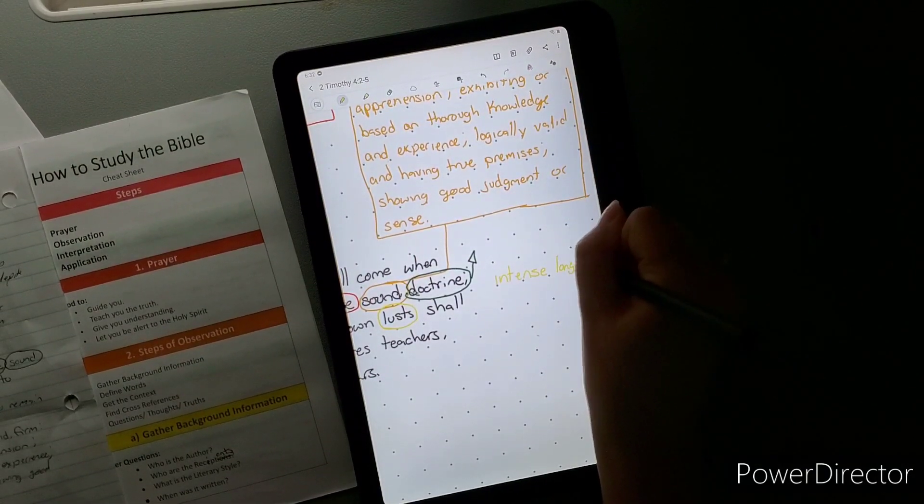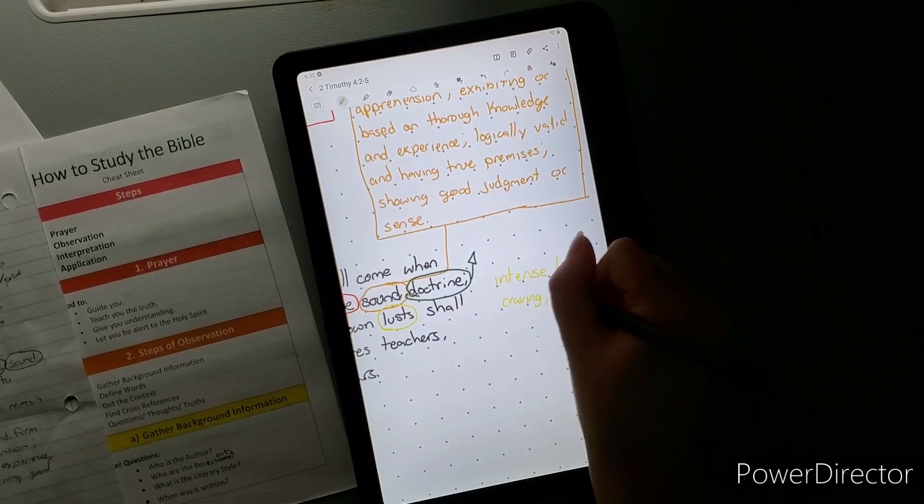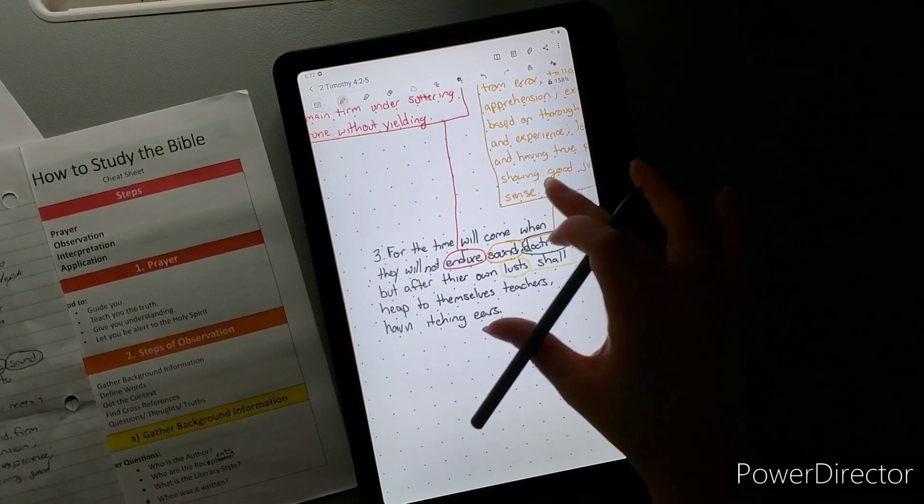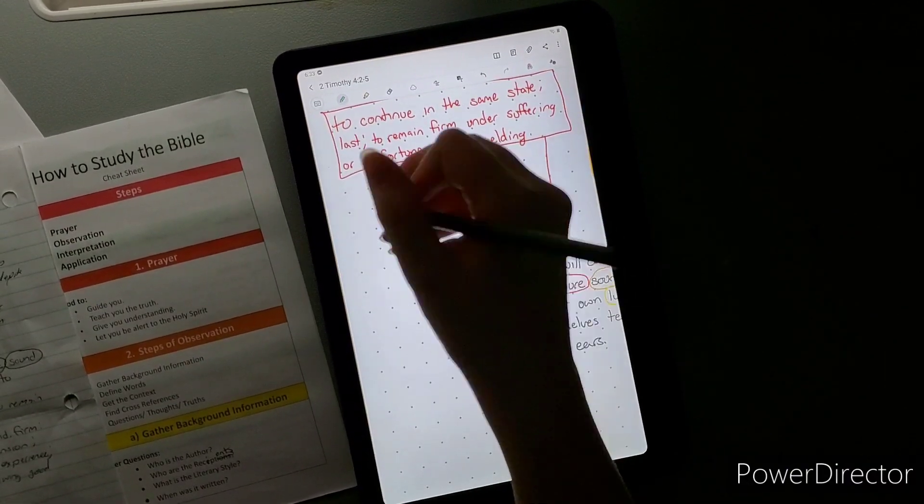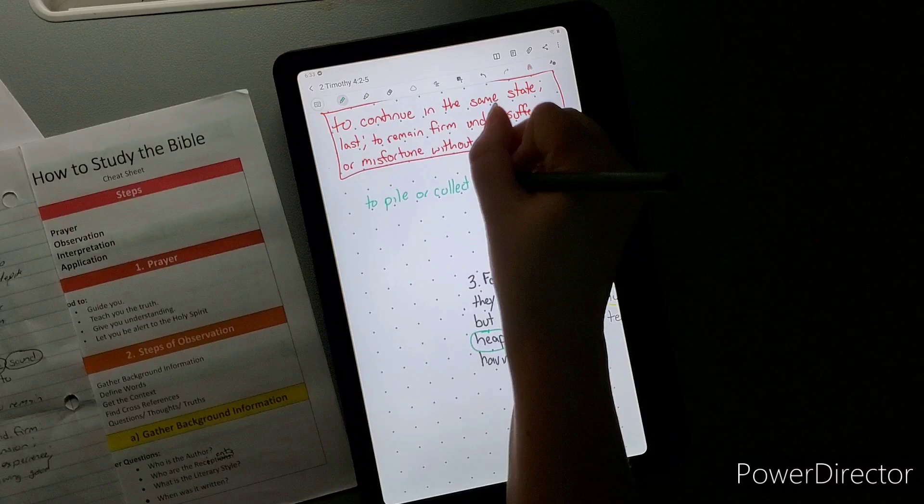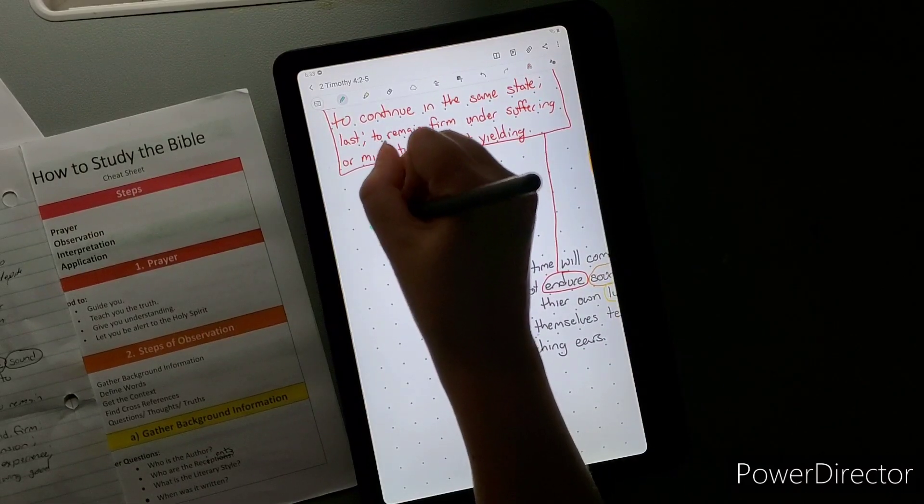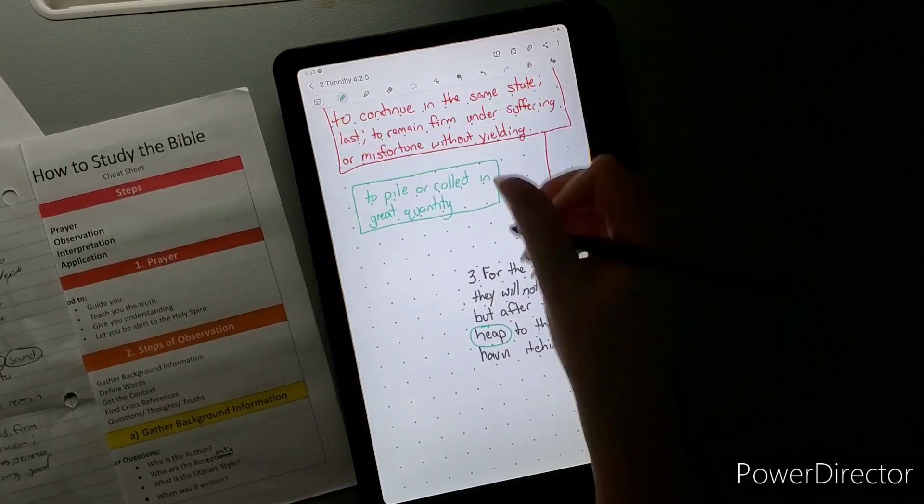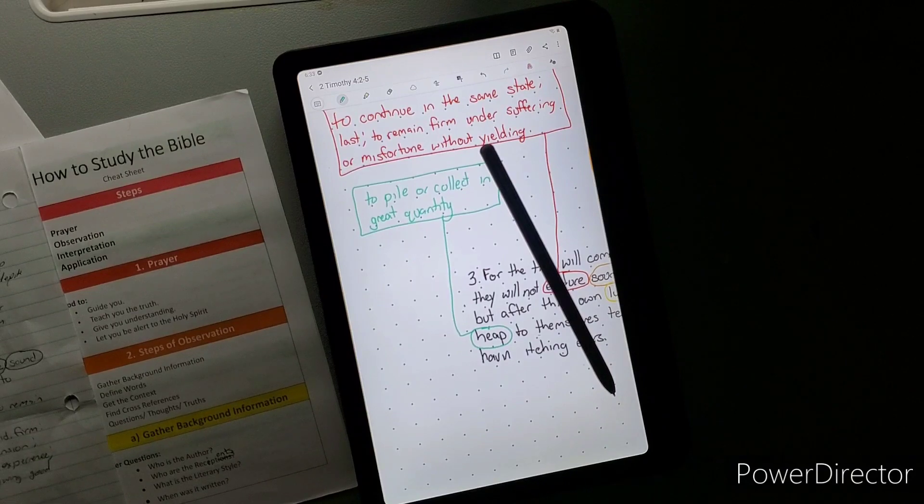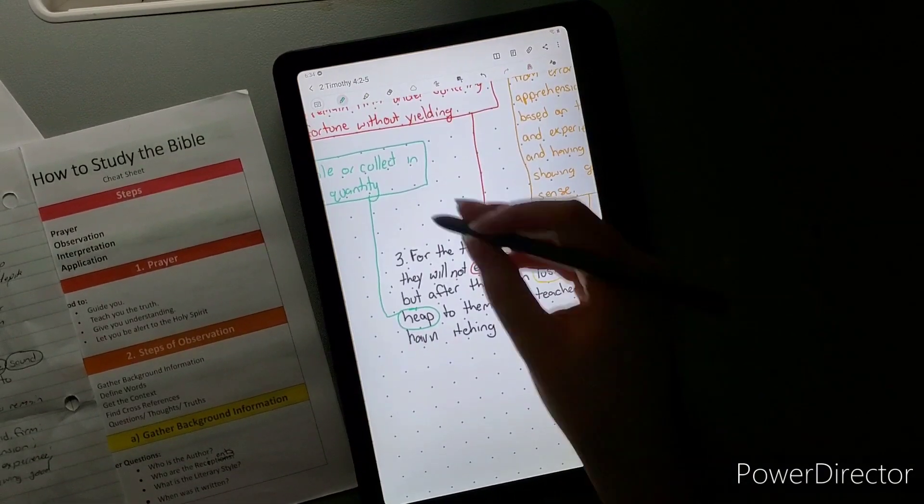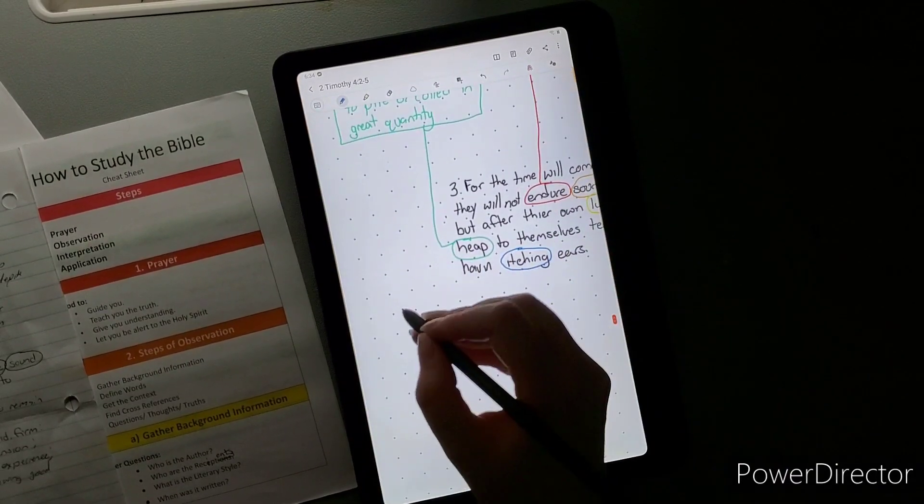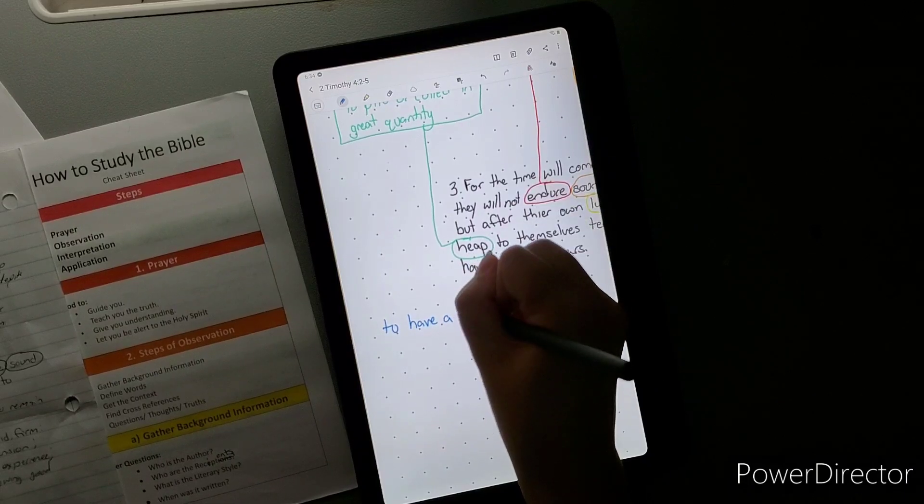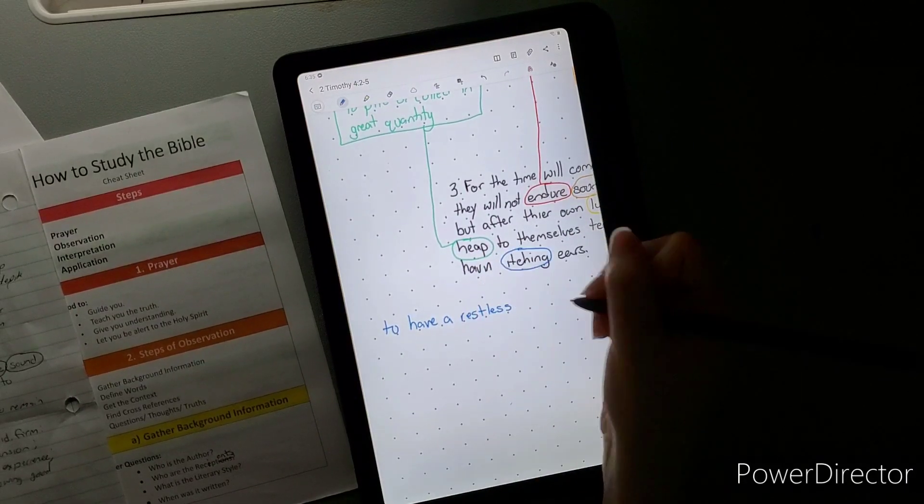They're not going to endure sound doctrine, so it ain't going to be good stuff, it's going to be bad stuff. Probably people that teach that it's okay to sin. Everyone sins, like it's okay to do these things. God still loves you. Yeah, God still loves you, but he's not going to be okay with sin. Sin separates you from God. Trying to get good sound doctrine, it's hard to find.